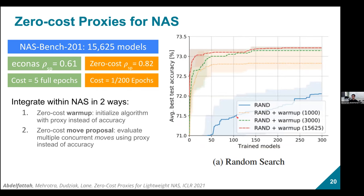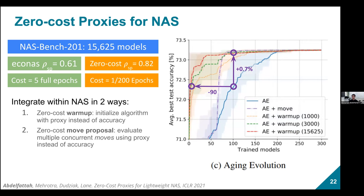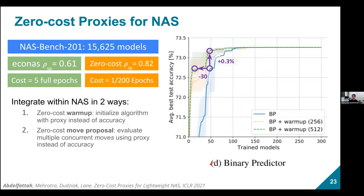Augmenting random search with zero-cost proxies gives a 50x runtime improvement and about two percent accuracy improvement at the same number of search models. Augmenting reinforcement learning makes it 25x faster than baseline. Augmenting aging evolution makes it 10x faster. Even applied to BRP-NAS — already the fastest sample-based search algorithm — it reduces the number of samples needed to reach a given accuracy by roughly 3x.